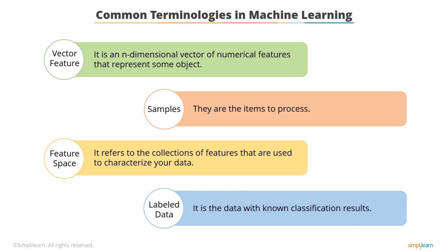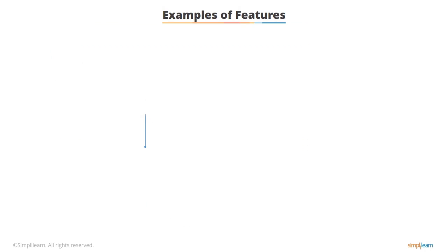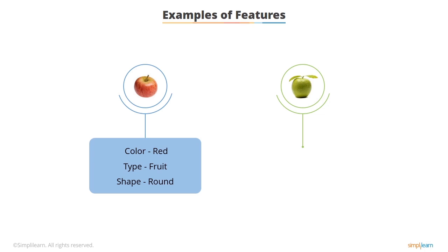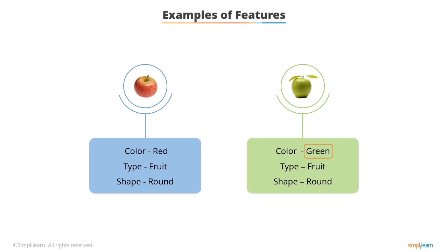Labeled data is the data with known classification results. Once a labeled dataset is obtained, you can apply machine learning models to it so that new, unlabeled data can be presented to the model, and a likely label can be predicted for that piece of unlabeled data. Here is an example of features of two apples — one is red and the other is green. In machine learning, the object is the apple. The features include color, type, and shape. In the first instance, the color is red, the type is fruit, and the shape is round. In the second instance, the color changes to green.